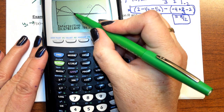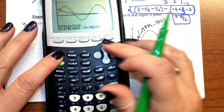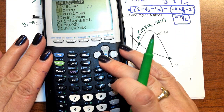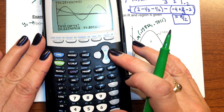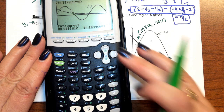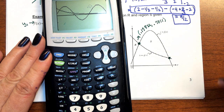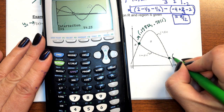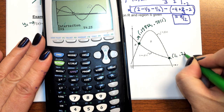Now I want to find this other point of intersection. So I'll go under second trace again, intersect. And this is going to be 1, 0.25.